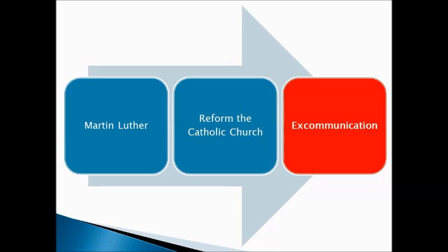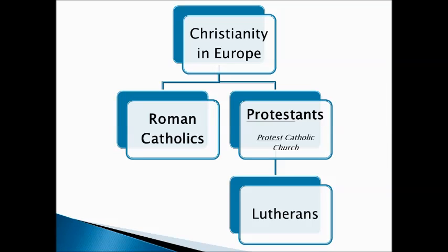Martin Luther continued to try to reform the Catholic Church, and the Pope excommunicated him. Excommunication was a big deal during the Reformation — if one was excommunicated from the church, they were afraid they would end up in hell, so this was not something to be taken lightly. When Martin Luther became excommunicated, we get the official start of the Protestant Reformation. Now there are two branches of Christianity in Europe: Roman Catholics and Protestants — those who are in protest against the Catholic Church. At this time, you get the Lutherans, who are the first set of Protestants.